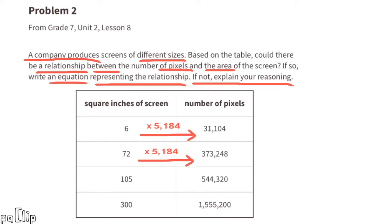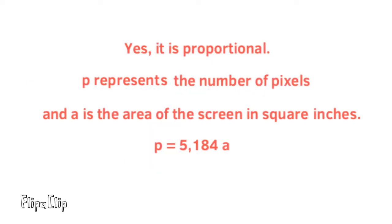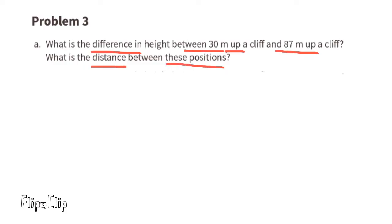For this table, the number of square inches of screen multiplied by the same number, 5184, equals the number of pixels on each screen. Yes, it is proportional. P represents the number of pixels and A is the area of the screen in square inches: P equals 5184A. The constant of proportionality is 5184, because you are constantly multiplying 5184 times the area of the TV screen to find out how many pixels would be on the screen.